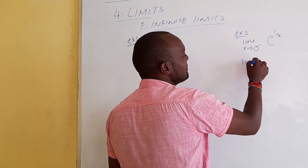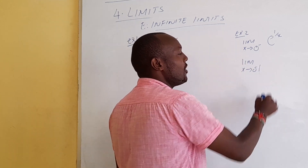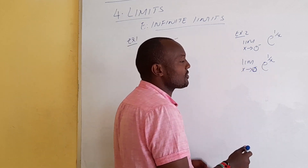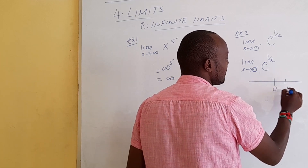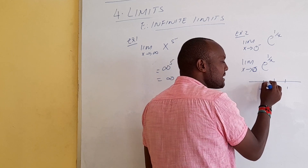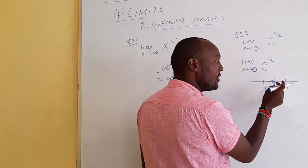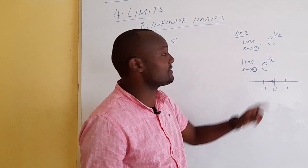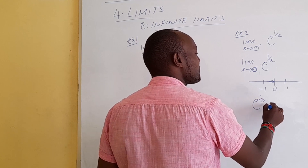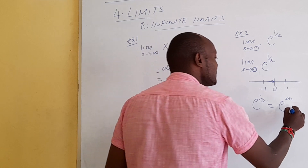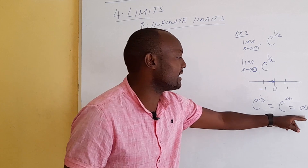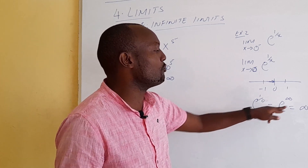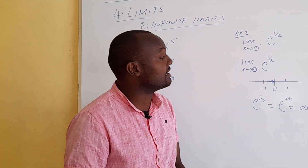Example 2: the limit as x approaches 0 from the negative direction of e to the power of 1 over x. With direct substitution, we assume x equals 0, so we have e to the power of 1 over 0. Since 1 over 0 is infinite, this becomes e to the power of infinity, and as we said, e to the power of infinity gives an infinite number.